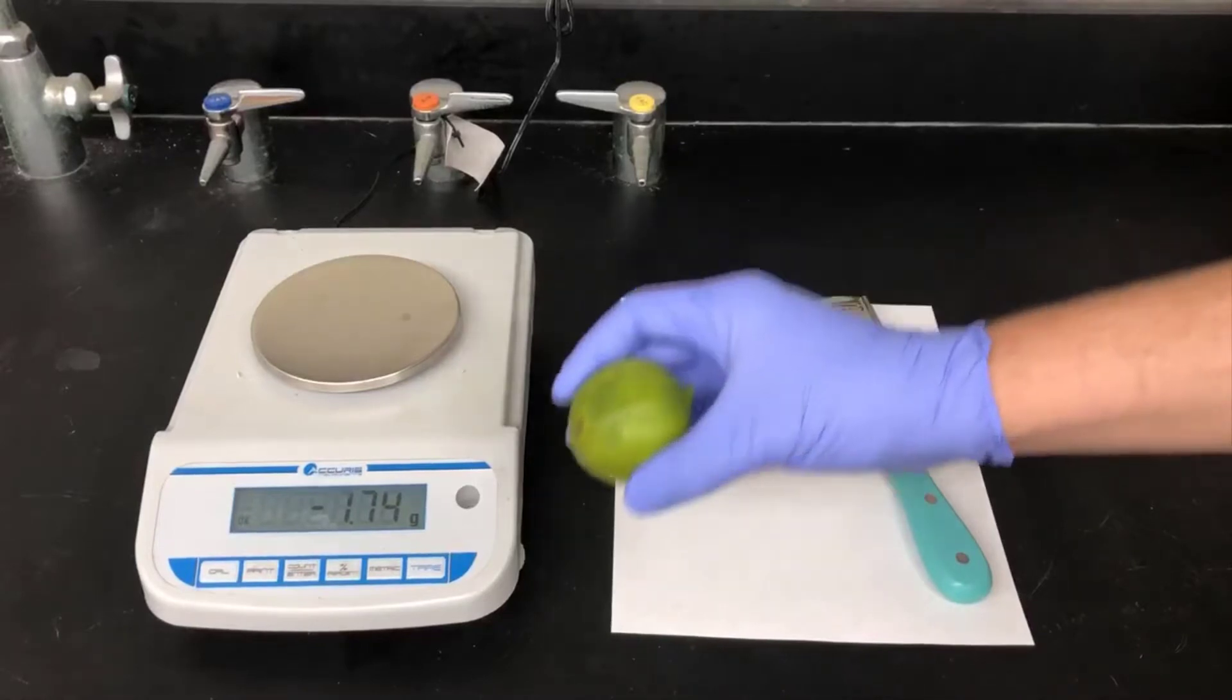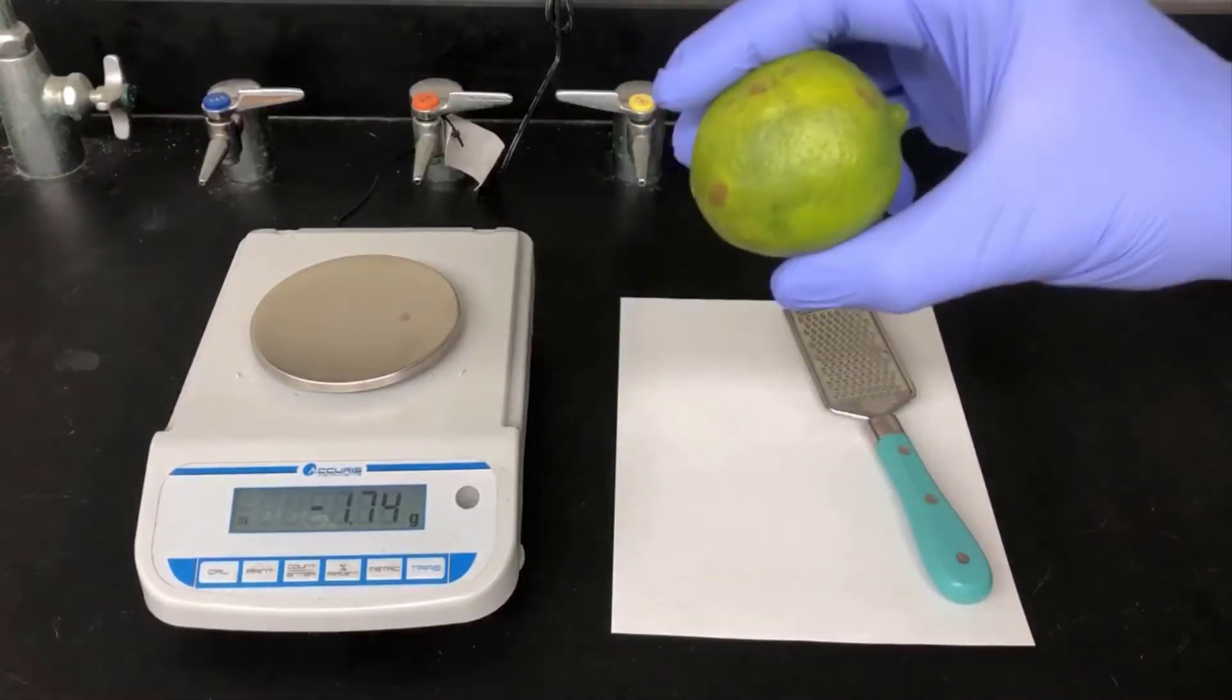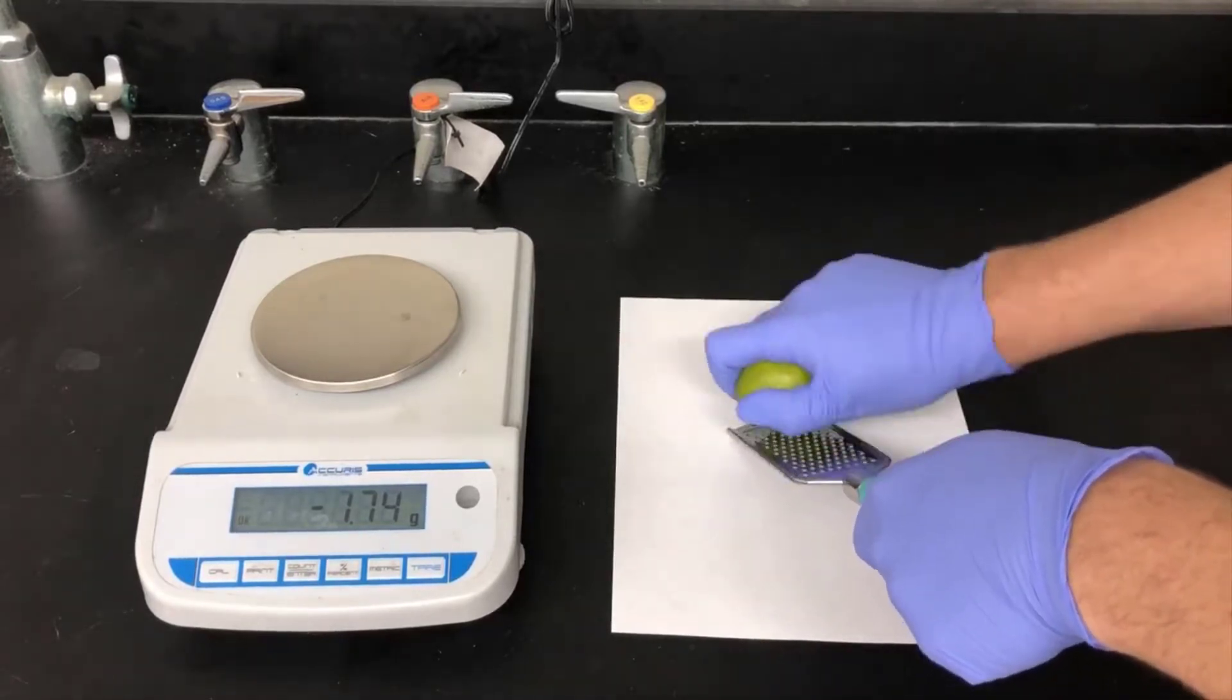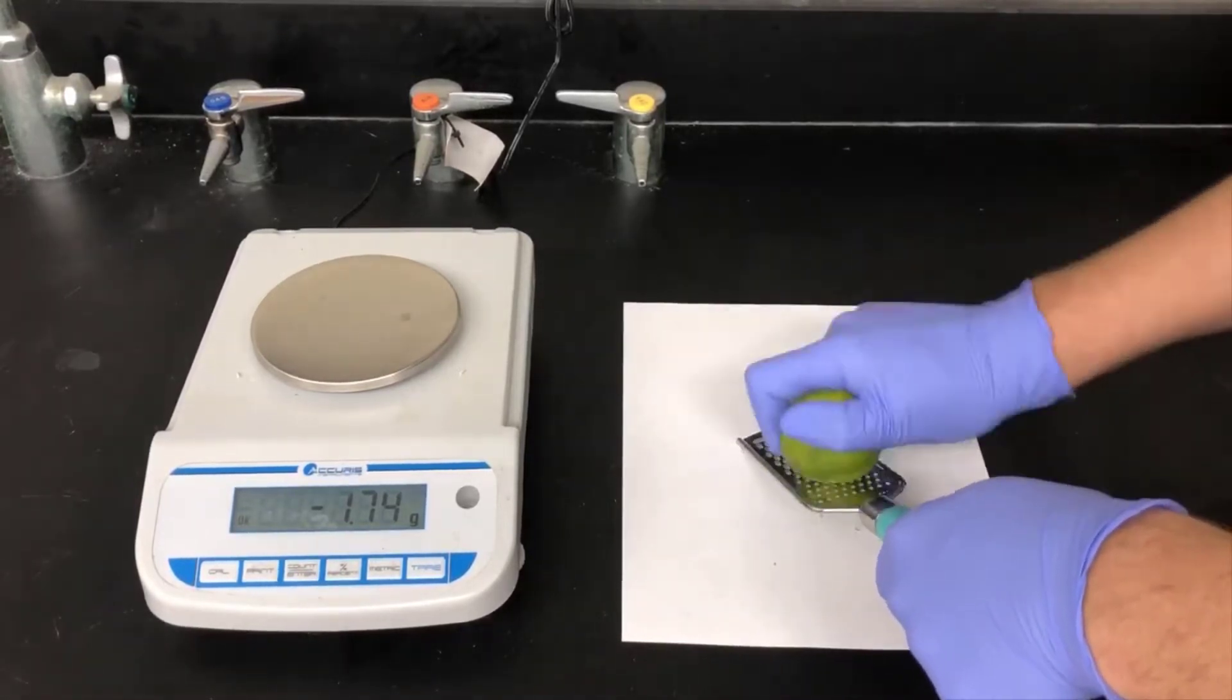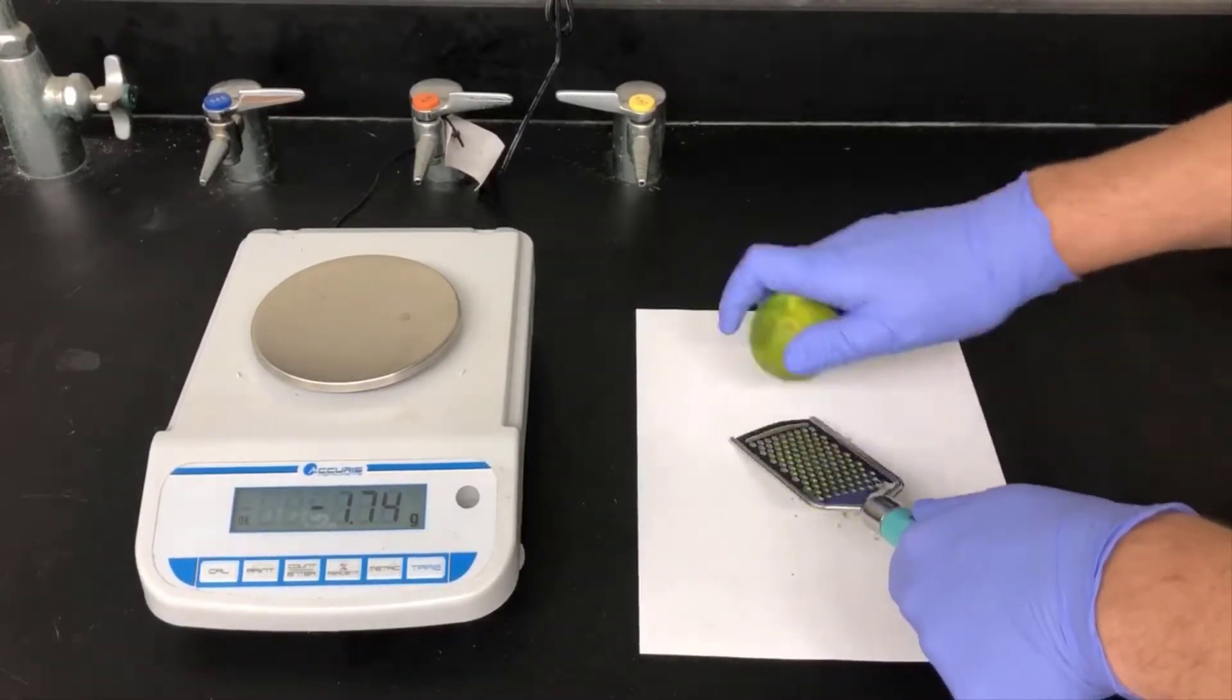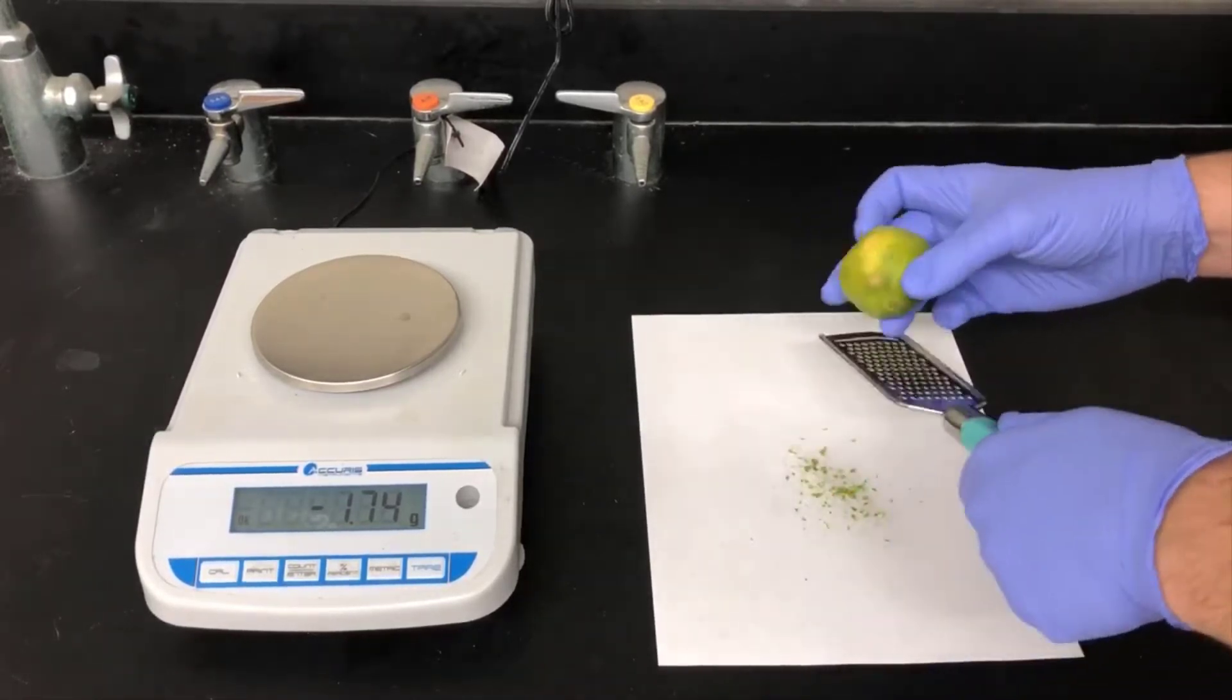I'll start by selecting a citrus fruit. I'll be using a lime today. I'll take that lime in a standard food grater and grate the outside of the lime to generate zest of lime. This is the shiny outer part that contains most of the essential oil. The inner pith part, the white part, doesn't contain as much so avoid that part if you can.